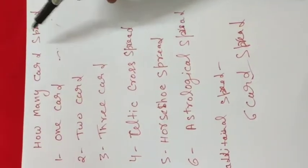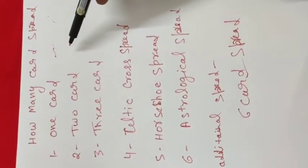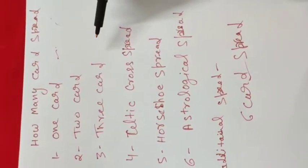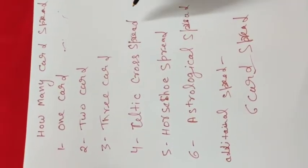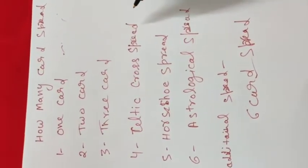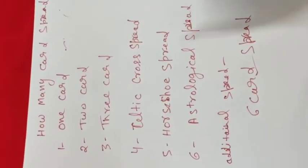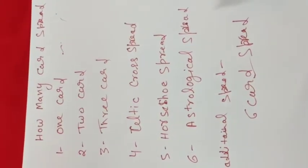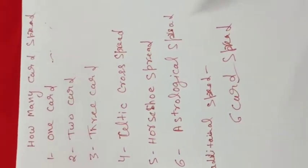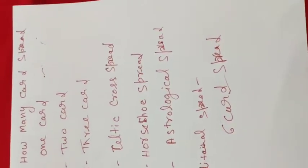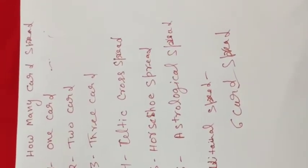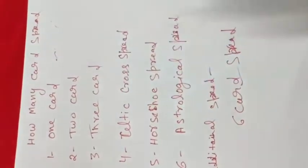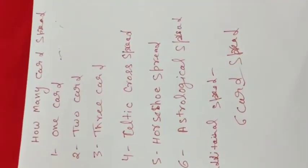The first is a one card spread, second is a two card spread, and third is a three card spread. Fourth is the cross spread — the Celtic card spread — fifth is the horseshoe spread, and sixth is the astrological spread. So now we are discussing what each one is and how we spread them.